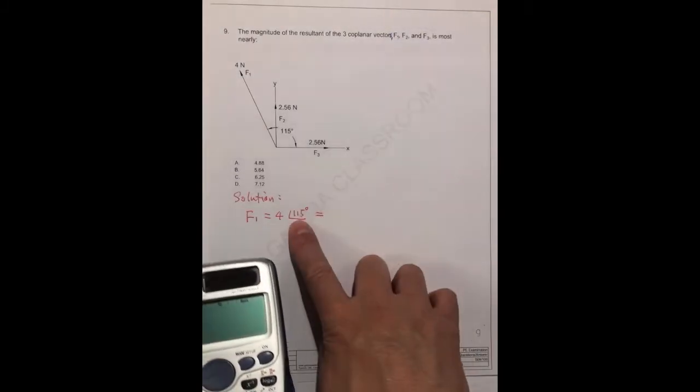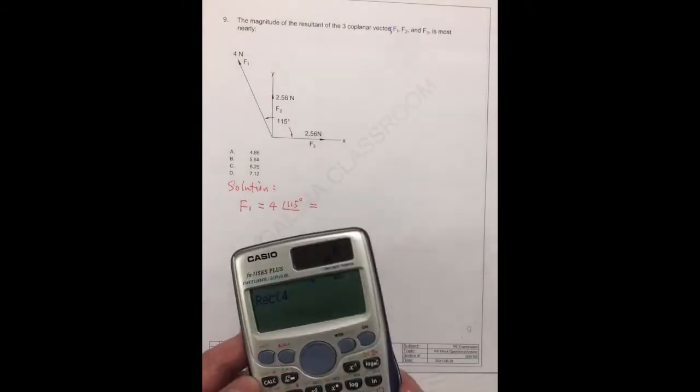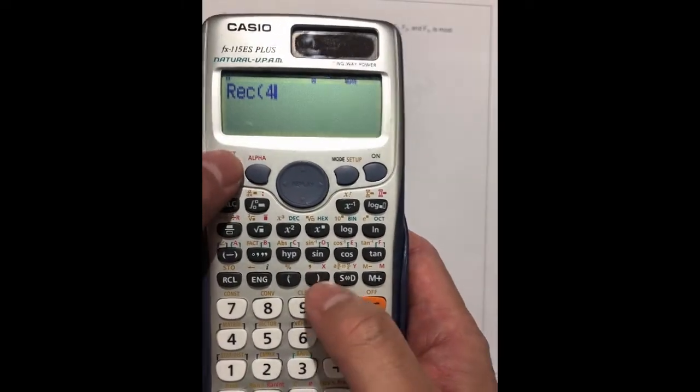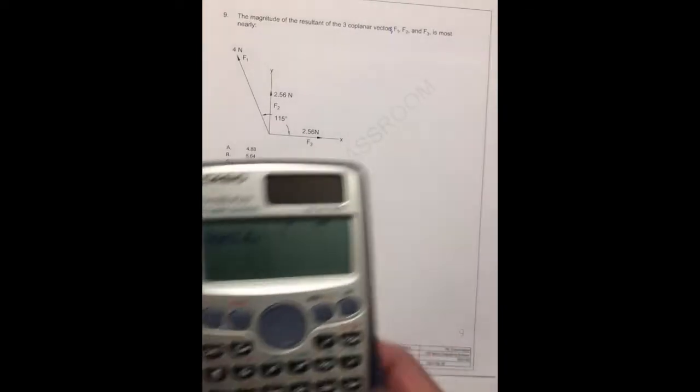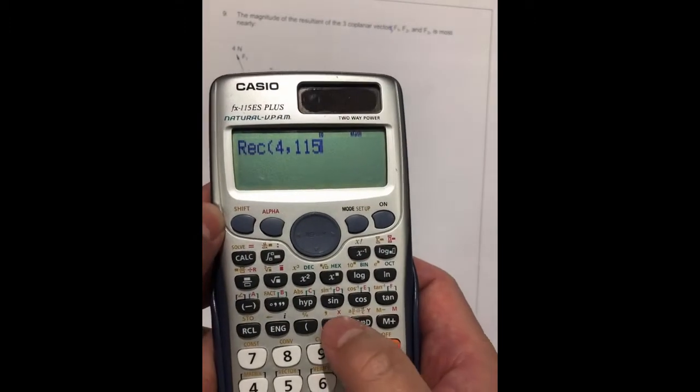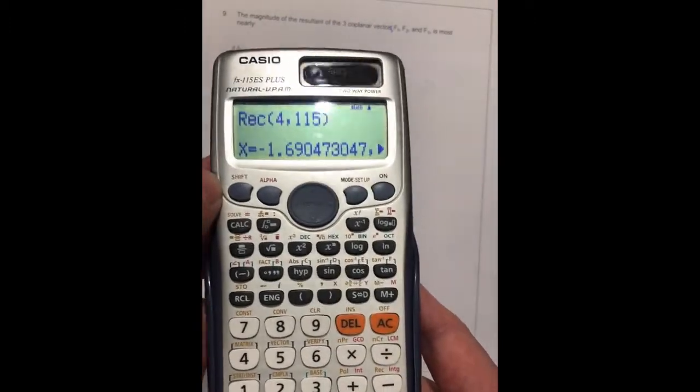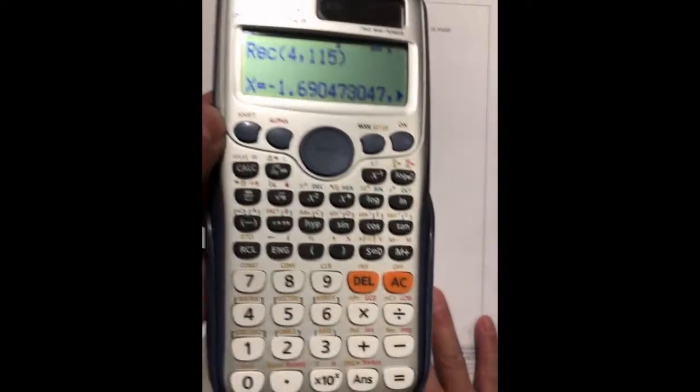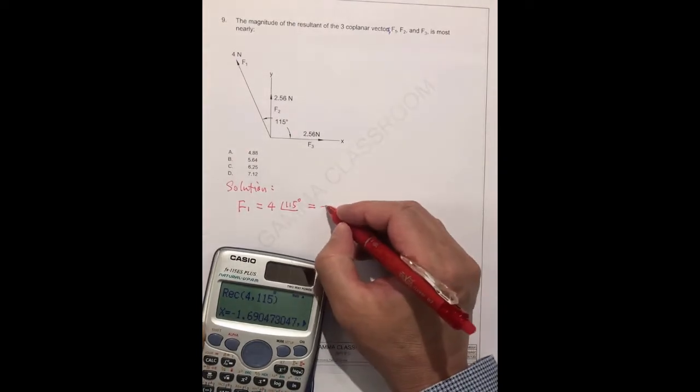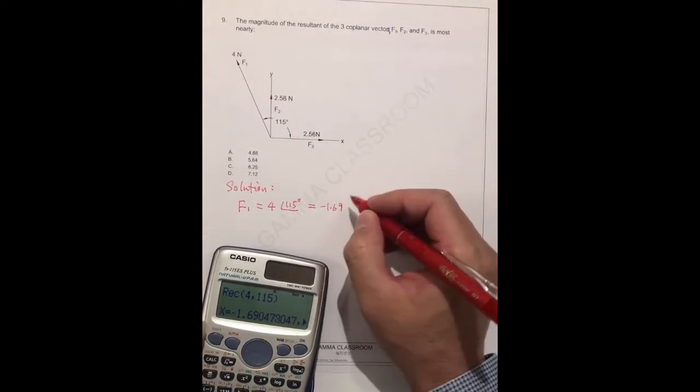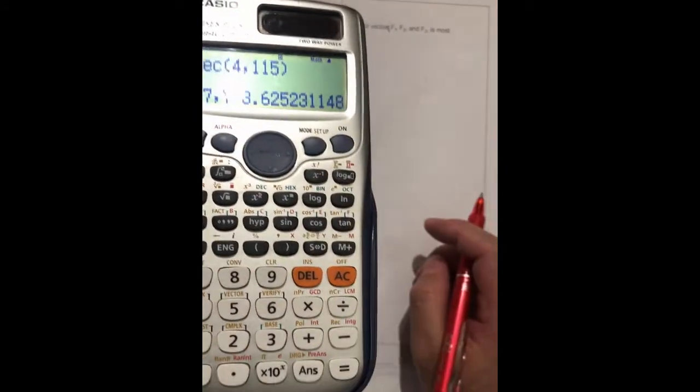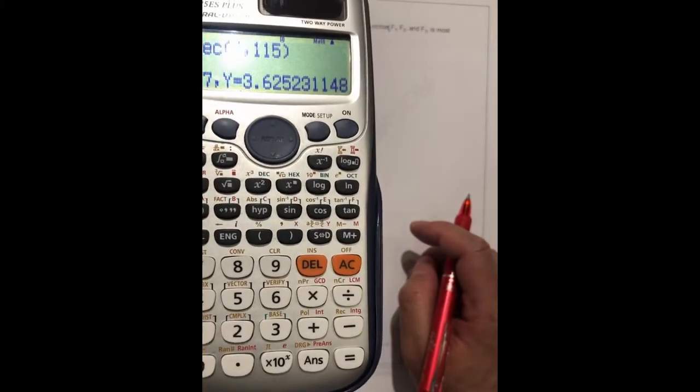You have to input this number. This is 4, number 4. And the little comma is here. But this is the second function. Shift, comma. Put the number 115, 1-1-5. It's a degree. Put the bracket, right? Get X. You can get the X minus 1.69. This is minus 1.69.